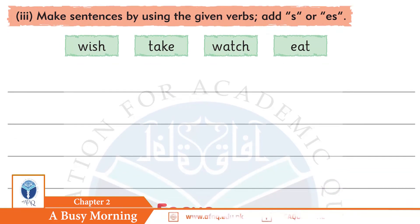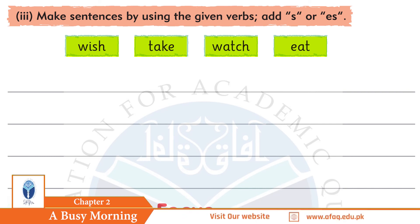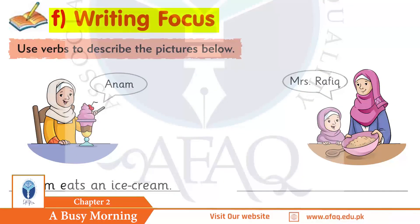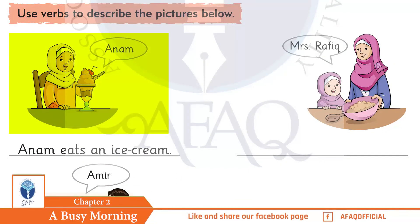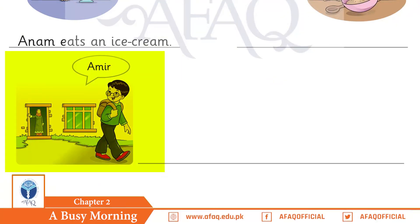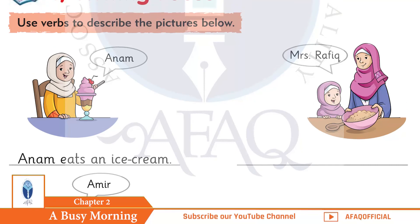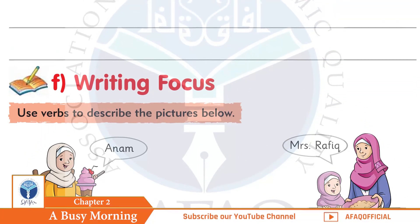In part 3, you have to make sentences by adding S or ES. The verbs given are: wish, take, watch, eat. These are the verbs and you need to add S or ES accordingly. Now let's look at our next task, writing focus, where you have to describe pictures. One picture is described for you as an example — Anam, it's an ice cream. Now write sentences about what Miss Rafiq is doing and what Amir is doing. This is how our lesson, A Busy Morning, ends today.